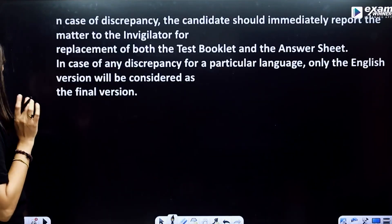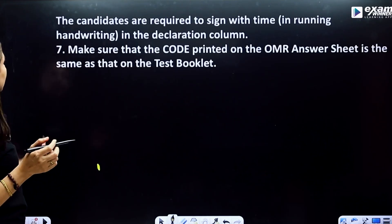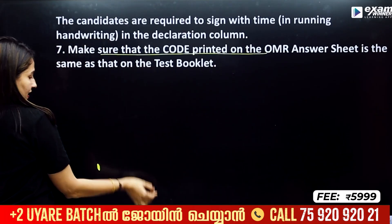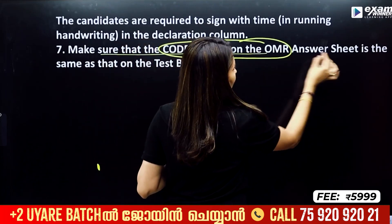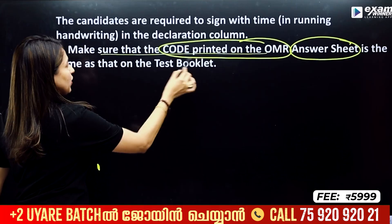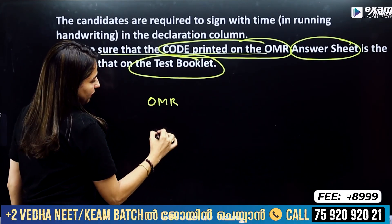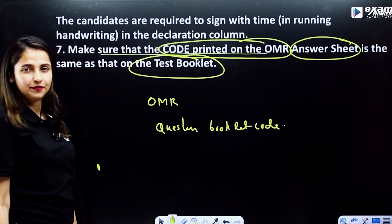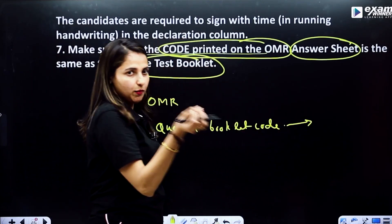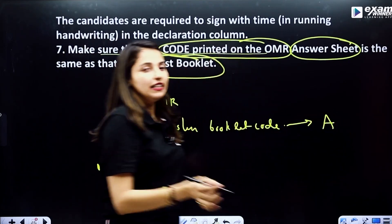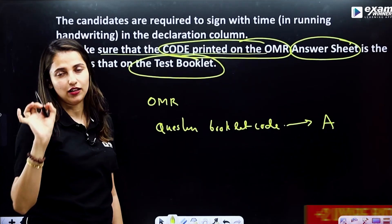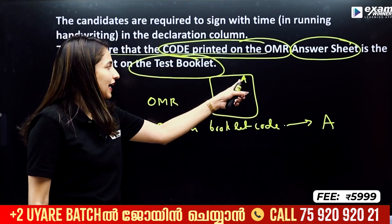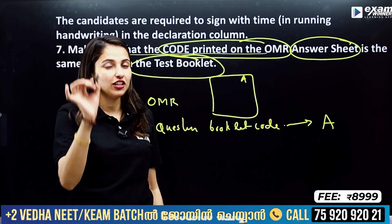That's why I will tell you here: the candidates are required to sign and make sure that the code is printed on the OMR and answer sheet. The OMR sheet code must be the same as that on the test booklet. The question booklet code — that same code must be written. You need to mark the correct bubble in the OMR sheet to match the question booklet code.